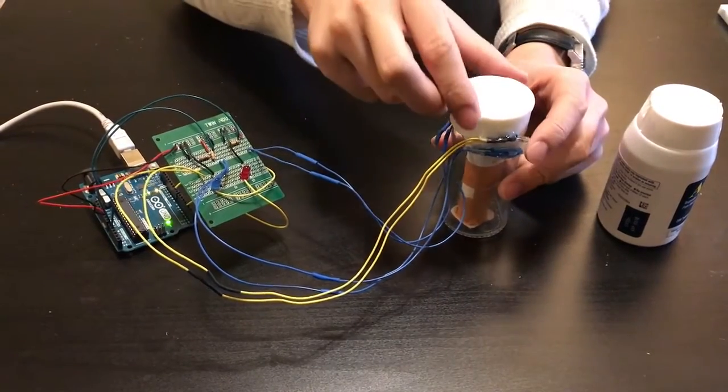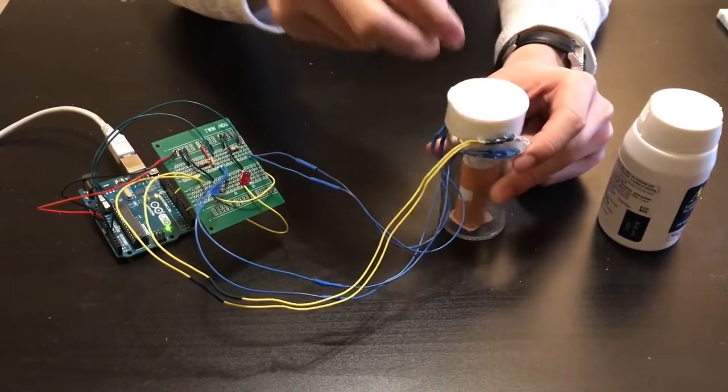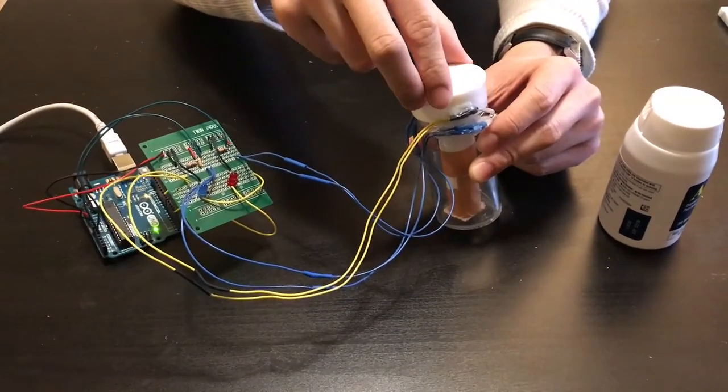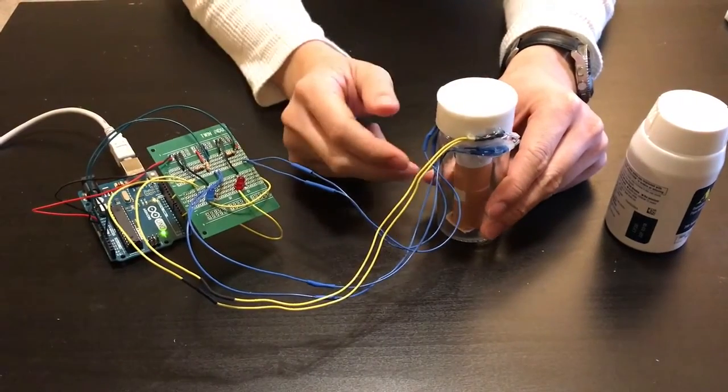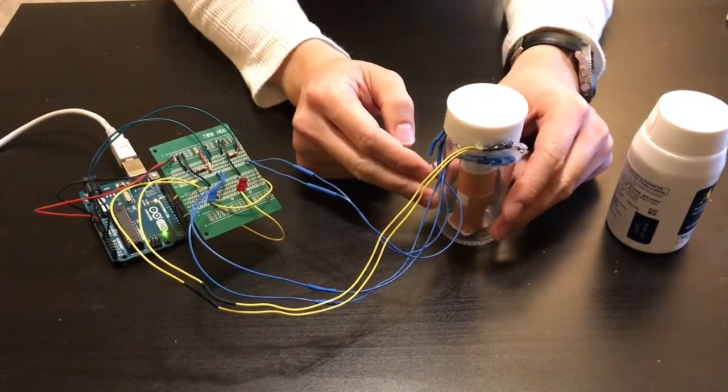To keep track if the patient has taken the pill we have an IR sensor to detect if the pill bottle has been opened and also a pressure sensitive resistor to count how many pills there are.